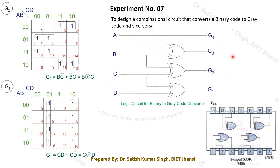The XOR gate IC to use is IC number 7486 — the 74LS86 quad two-input XOR gate. This is the internal pin configuration of the IC. Only one IC is sufficient to perform this binary-to-gray code conversion. Similarly, we can design a circuit for gray-to-binary conversion.